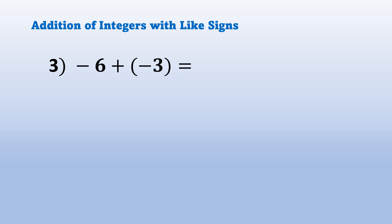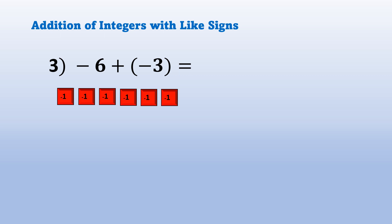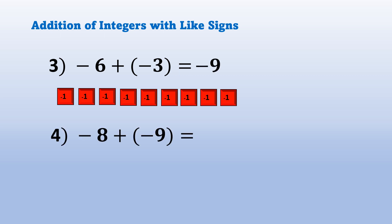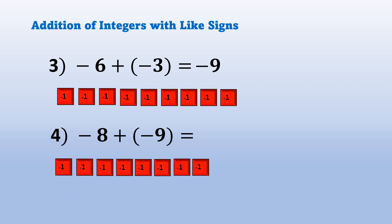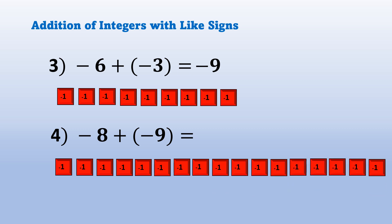Some more examples: addition of integers with like signs. Example number 3: negative 6 plus quantity negative 3 equals blank. We have 6 red tiles to represent negative 6 and 3 more red tiles. We're going to add them — that would be 9 red tiles. We have negative 9. Example number 4: negative 8 plus quantity negative 9 equals blank. We have 8 red tiles and 9 red tiles, so we have 17 red tiles all in all. To add them, we have negative 17.